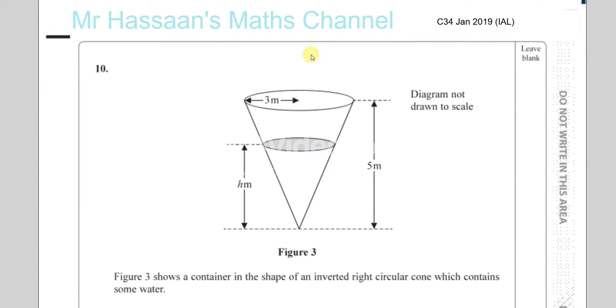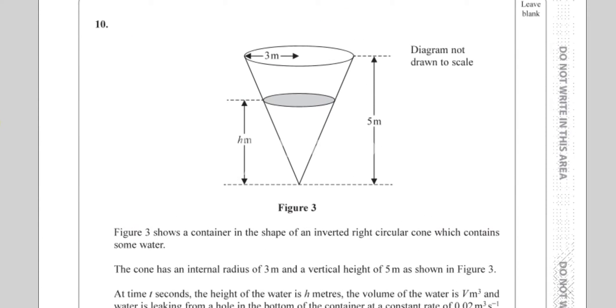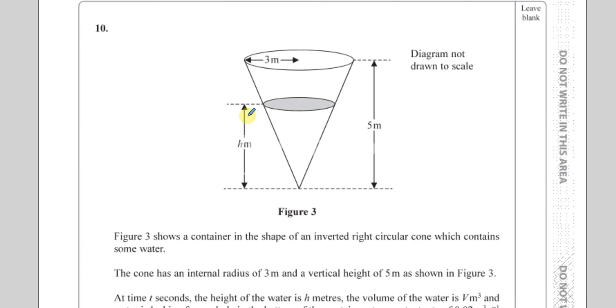Question number 10 from January 2019 IAL. We have this cone shape, inverted cone, which contains some water up to the height h. The internal radius of the cone is three meters, so the radius of the cone is three meters, and the vertical height is five meters, as shown in Figure 3.